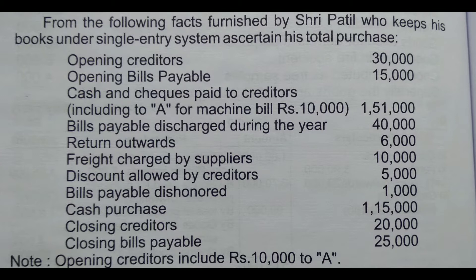Let us read the problem. From the following facts furnished by Shri Patil, who keeps his books under single entry system, ascertain his total purchases. The data is given: Opening creditors Rs. 30,000. Opening bills payable Rs. 15,000. Cash and cheques paid to creditors Rs. 1,51,000, of which Rs. 10,000 included paid towards machinery.